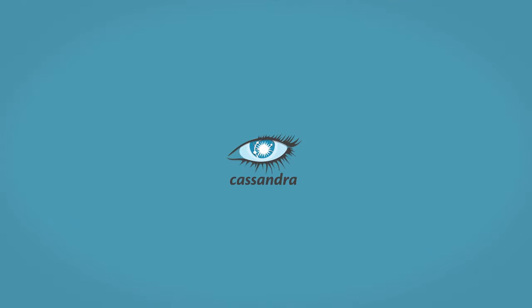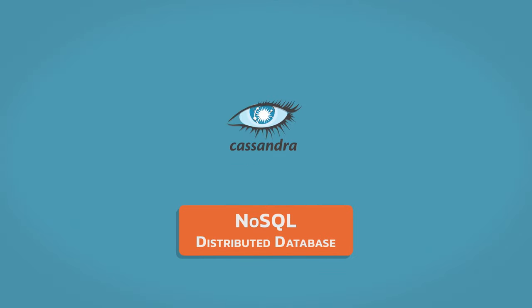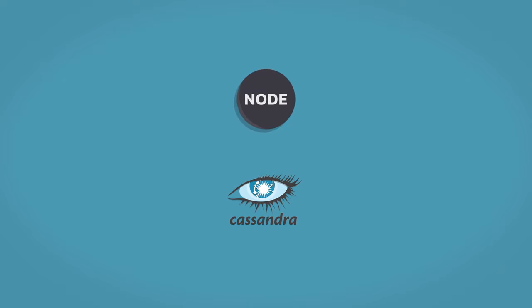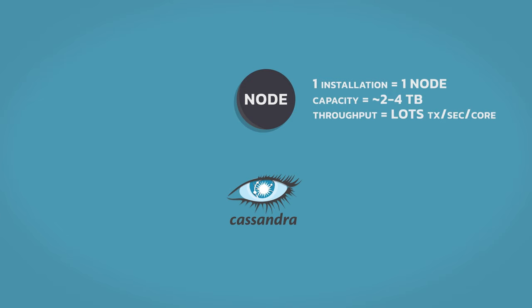So let's start with what Cassandra is. It is a NoSQL distributed database. Each instance of Cassandra is called a node, and this contains a full Cassandra database. Each node can handle roughly two to four terabytes of data and many thousands of operations a second per core. This really depends on the resources allocated to a single node, but generally we're talking thousands of operations a second per core.